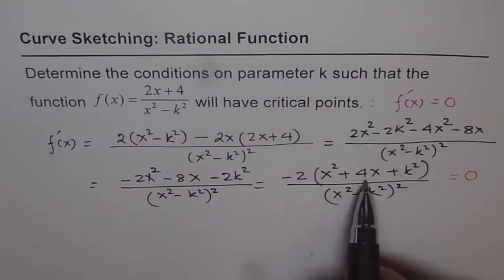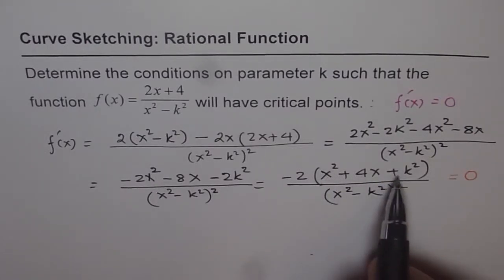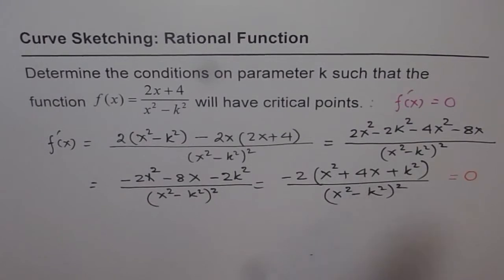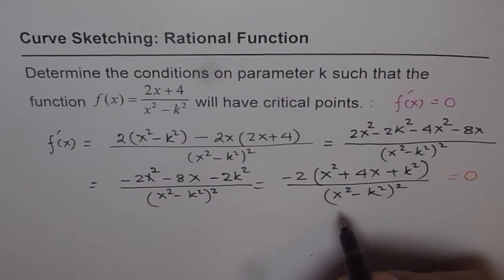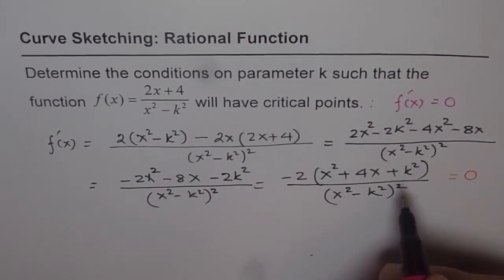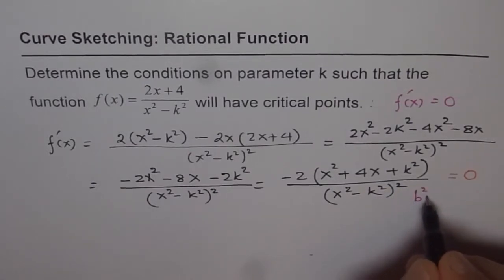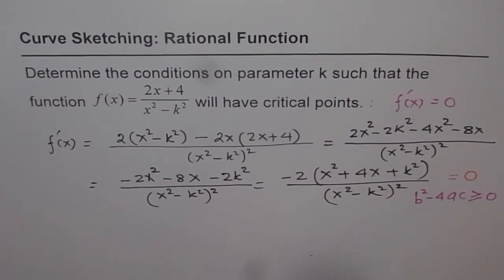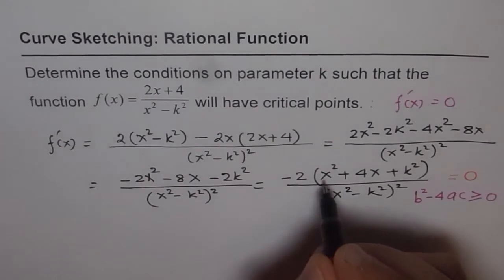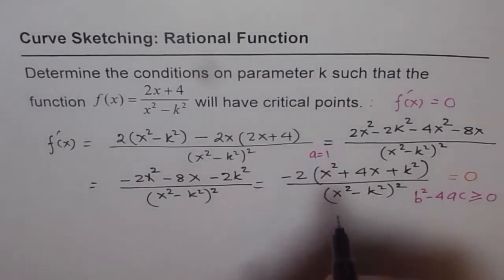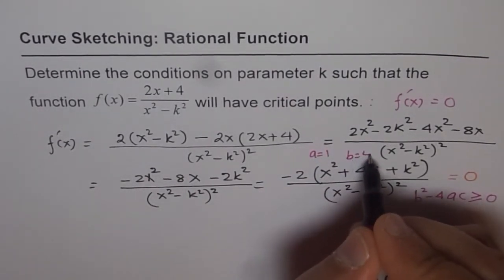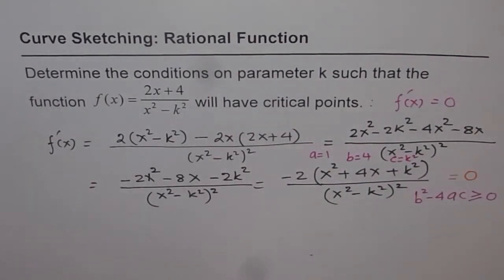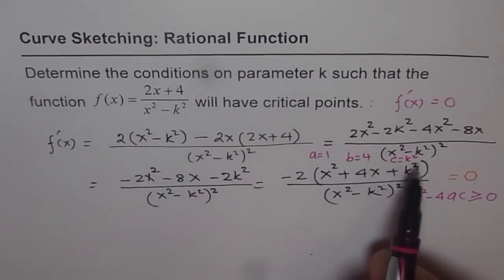This is a quadratic equation, x² + 4x + k². It can have real roots only if b² - 4ac ≥ 0. That is the concept we are going to use: a quadratic equation has a zero only if b² - 4ac ≥ 0. Here, a = 1 (coefficient of x²), b = 4 (coefficient of x), and c = k².